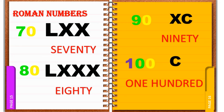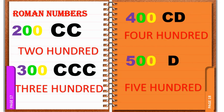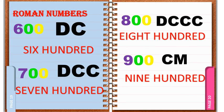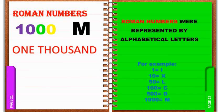200 represents CC, 300 represents CCC, 400 represents CD, 500 represents D, 600 represents DC, 700 represents DCC, 800 represents DCCC, 900 represents CM, 1000 represents M.